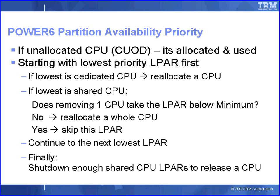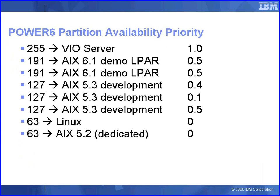We carry on going through our priority list, but if we still fail to find a CPU we can reallocate, we'll shut down enough shared CPU logical partitions to release a whole CPU, and then we're OK. So what would happen on my machine? On the left-hand side we have the priorities set to my various logical partitions in priority order; on the right-hand side, how much CPU is allocated to them. My machine is a 4 CPU machine — it's a 570. If a CPU failed, just by luck, nothing would happen at all, because if you add up all the CPU used it comes to three CPUs, so we can survive without deallocating anything.